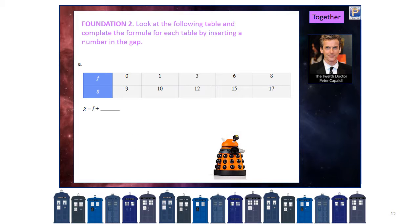Looking at the next table: if F is 0, G is 9 — so we think we added on 9. Let's check: 1 plus 9 — that works. 3 plus 9 — looking good. So it must be G equals F plus 9. See how we worked through the table to work out the solution, to find what the actual equation ended up being.